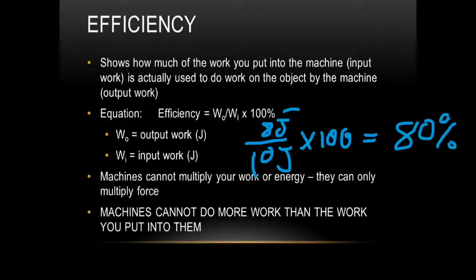You've got to keep in mind, machines cannot multiply your work or energy. They can only multiply the force. So, however much work you put in, or however much energy you put in, you're not going to get all of that back. It's going to be lost in some form, usually sometimes heat or sound. Those are some ways that you can lose that energy. But machines don't multiply your energy, they only multiply the force that you apply to the object. And machines cannot do more work than you put into them. So however much work you put into them is the same amount of work you're going to get out of the machines.